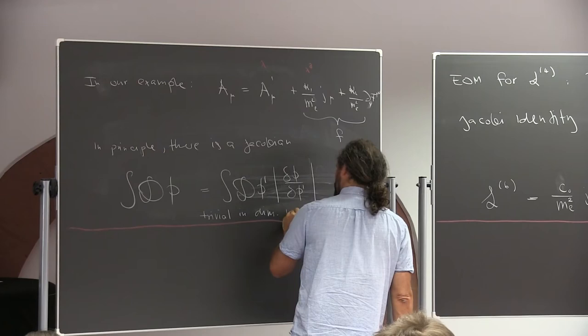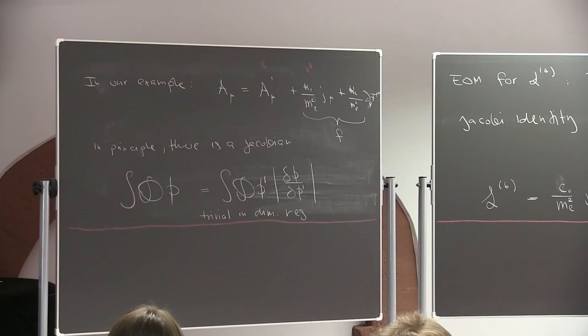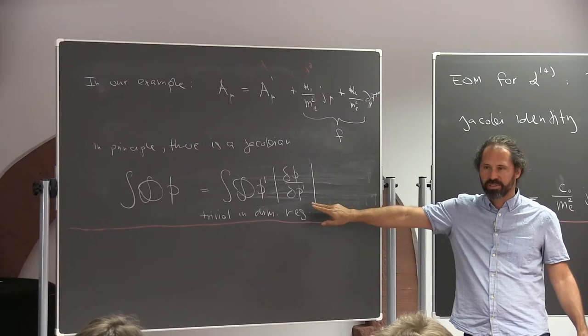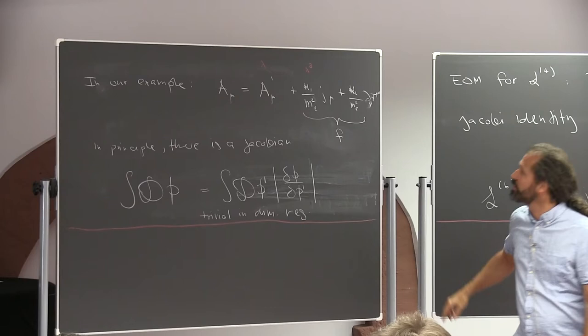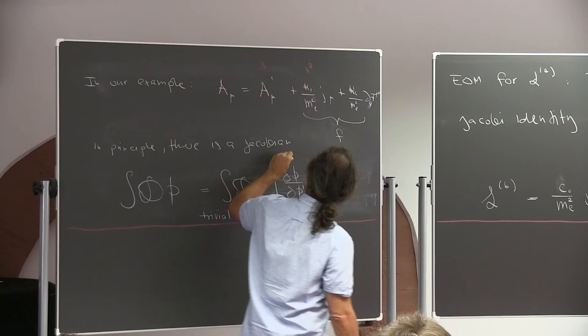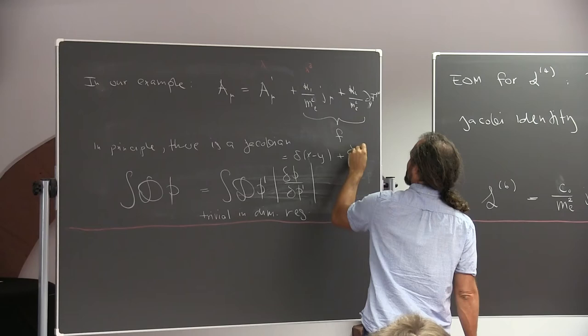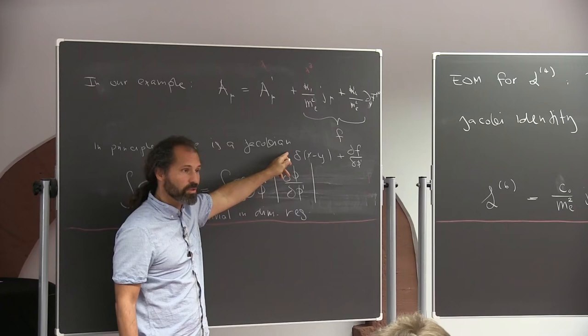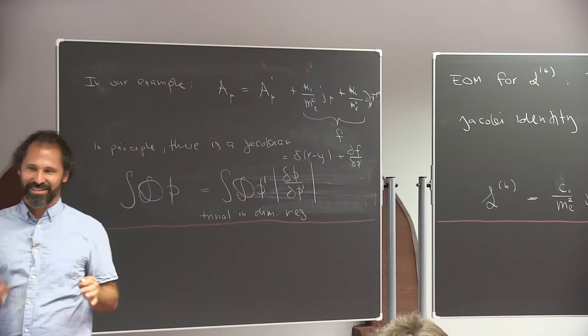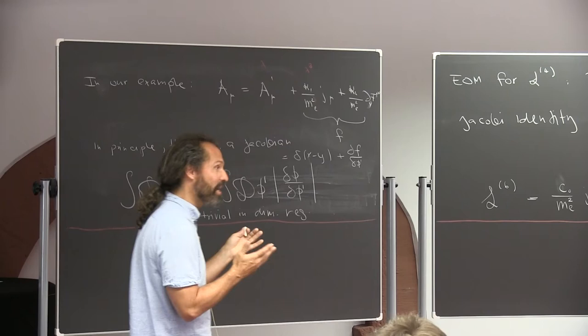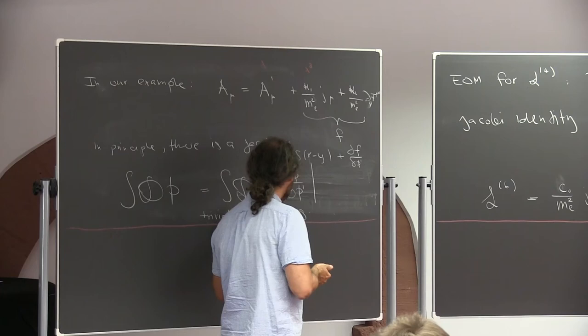In the outline PDF there's a link to lecture notes where I show this explicitly. The way to analyze this Jacobian: you can write down the operator inside, which is delta(x-y) plus delta f / delta phi prime. To deal with the Jacobian you can introduce a ghost field, put it in the Lagrangian, use Feynman rules, and compute. You'll find all the loop contributions you get are scaleless integrals, so you get nothing — the Jacobian is trivial.